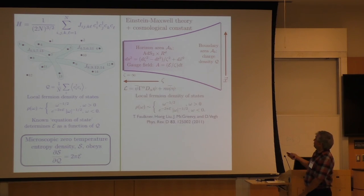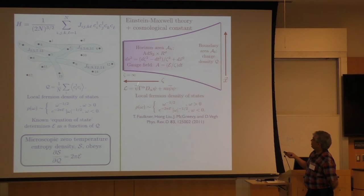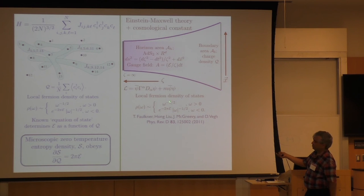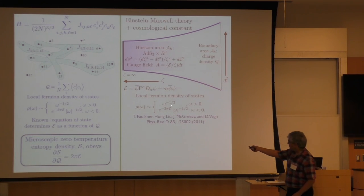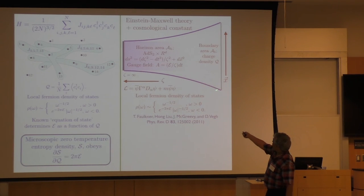So you do the solution of Einstein-Maxwell theory, then you compute — you take a fermion and have it move in this background, just a single fermion. You compute a density of states. You can choose the mass of the fermion and cleverly enough get exactly the same form as the quantum model. You read off what this E is, and this E has the interpretation of an electric field created by this boundary charge in this curved space.